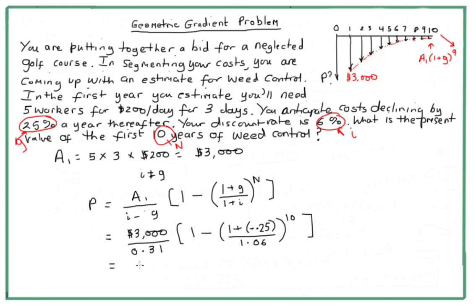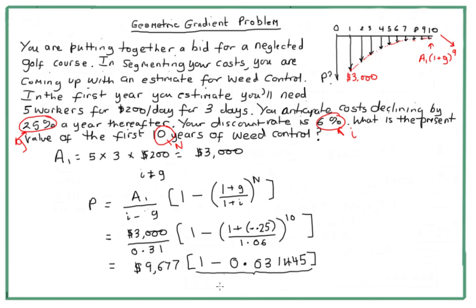So $3,000 divided by 0.31 gives us 9,677. Then (0.75 divided by 1.06) to the power of 10 equals 0.031445, so 1 minus that is 0.96855. Multiplying 9,677 by 0.96855 gives us a present value of $9,373.